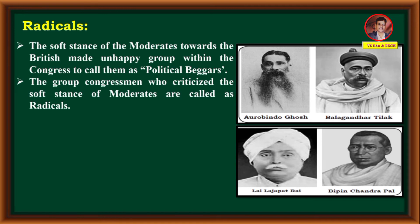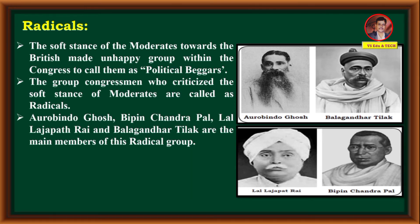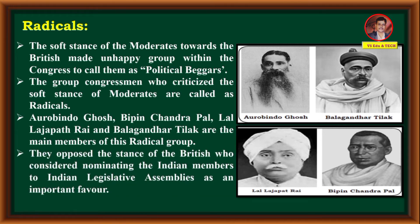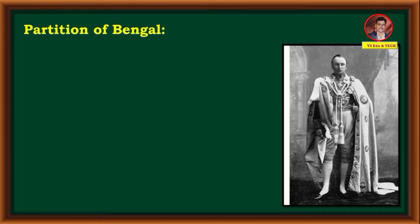Important radical leaders were Aurobindo Ghosh, Bal Gangadhar Tilak, Lala Lajpat Rai, and Bipin Chandra Pal. They opposed the British stance of considering nominating Indian members to the Indian Legislative Assembly as an important favour. An important event that led to the development of radicalism was the partition of Bengal. The anti-British sentiment was dominant in Bengal — it was the centre of anti-British protests.